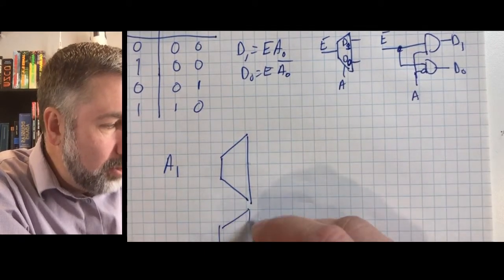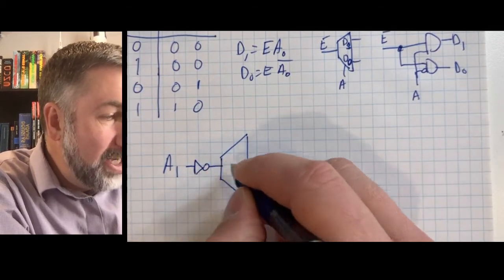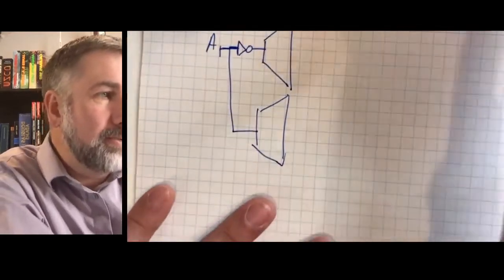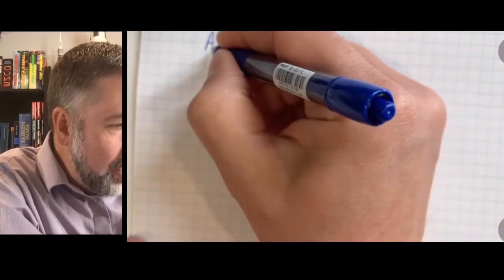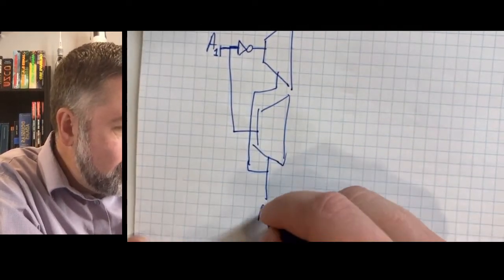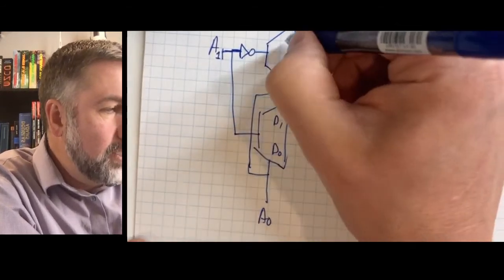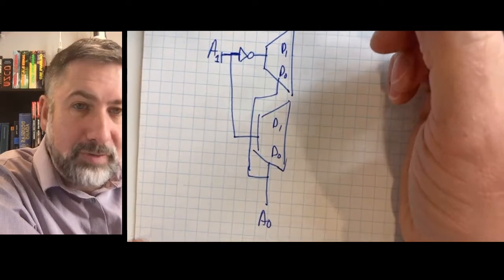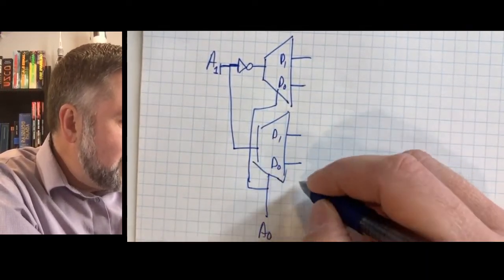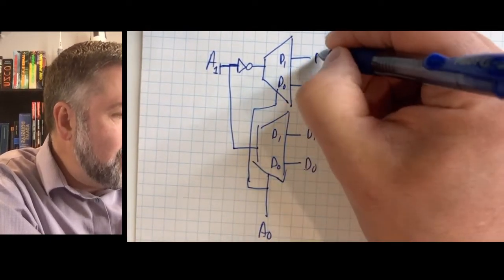Here's what I mean — here are two of the smaller 1-to-2 decoders. When A1 is 0, we enable the top device. When A1 is 1, we enable the bottom device. A0 is fed as the address line into both smaller devices. And the D0 and D1 outputs from each smaller device combine to give us D0, D1, D2, and D3.